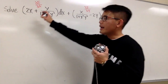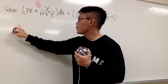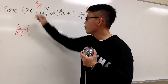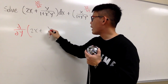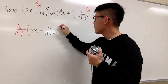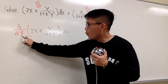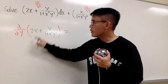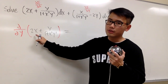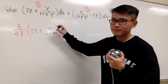So right here I'm going to differentiate this with respect to y. We will have (2x + y) / (1 + x²y²) like this. In this situation, y is the variable and x is the constant. The first term 2x, when we take the derivative with respect to y, it becomes 0, so we just have to focus on the remaining term.